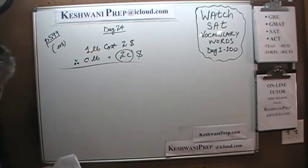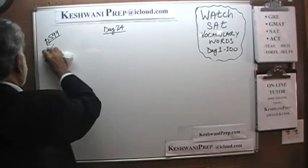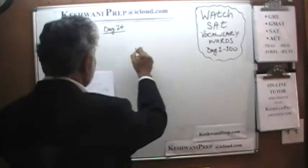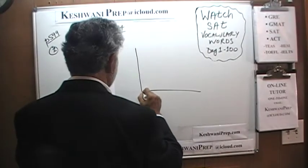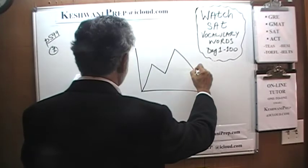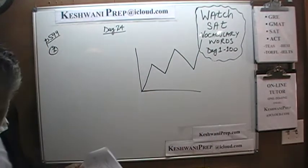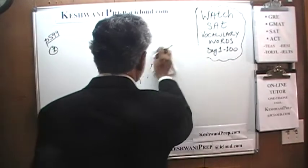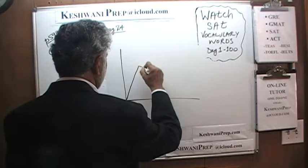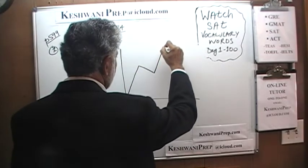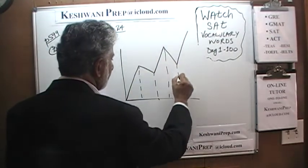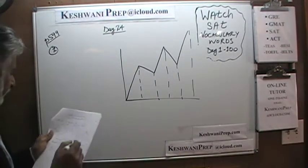In number two, we are given a graph with five different segments. It rises, then it falls, then it rises again, then it falls, and then rises one more time. Let me redraw it: it rises, then it falls, then it rises, and then it falls. One, two, three, four, and five. The question is simply: the sharpest drop occurs between which period?